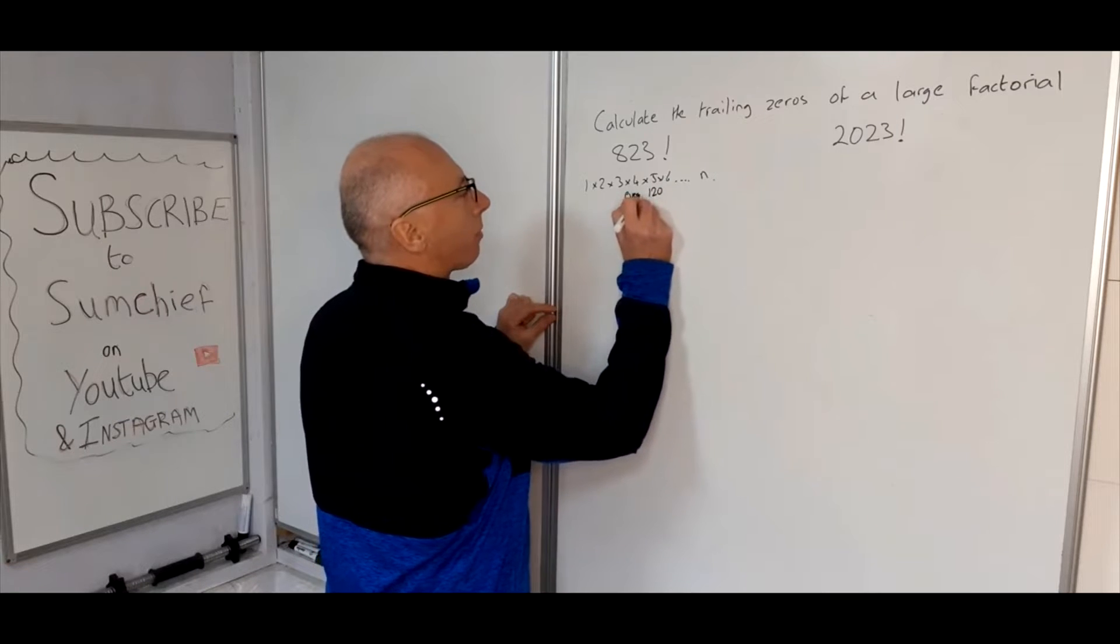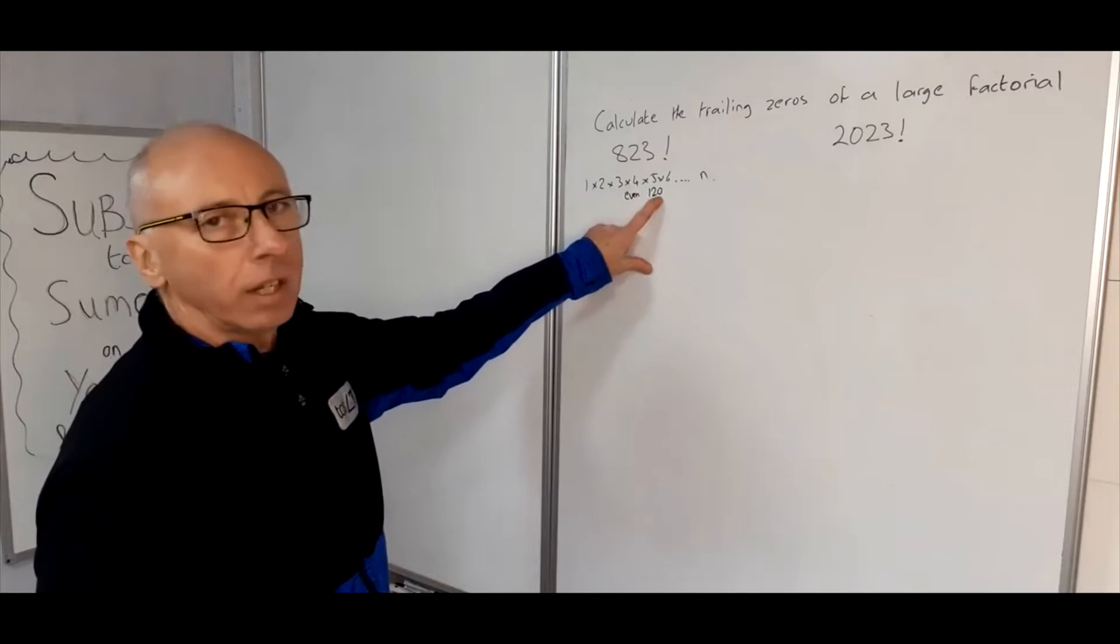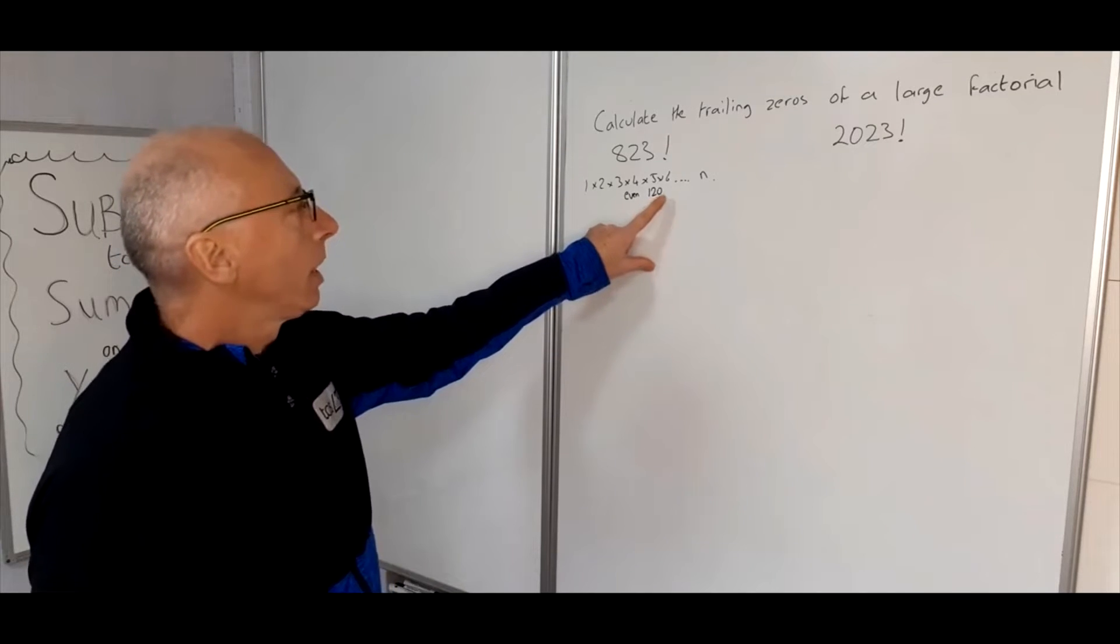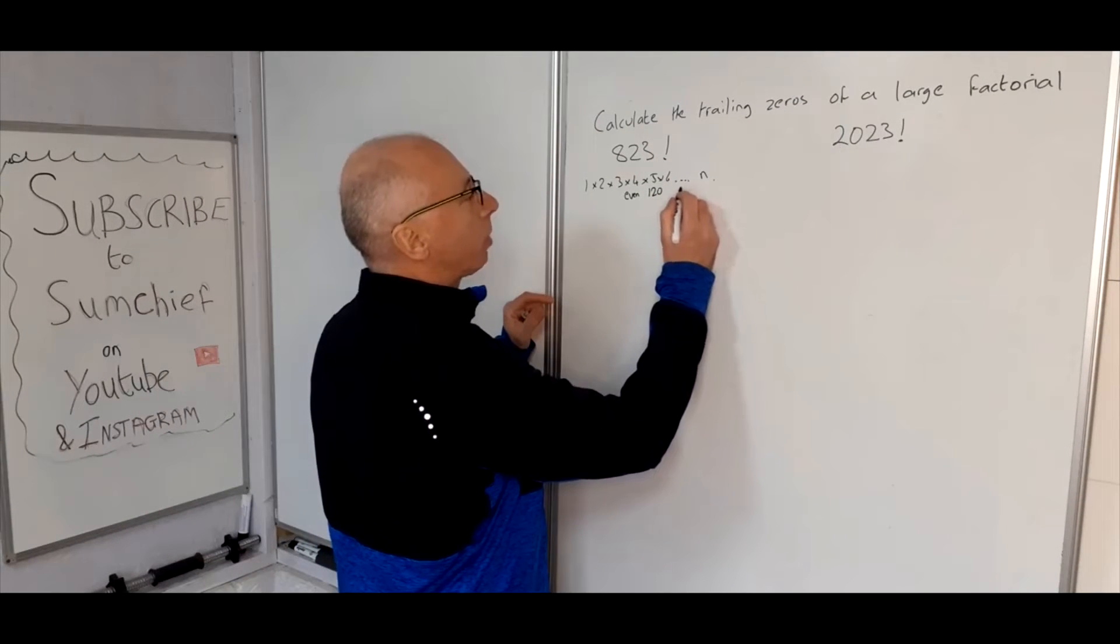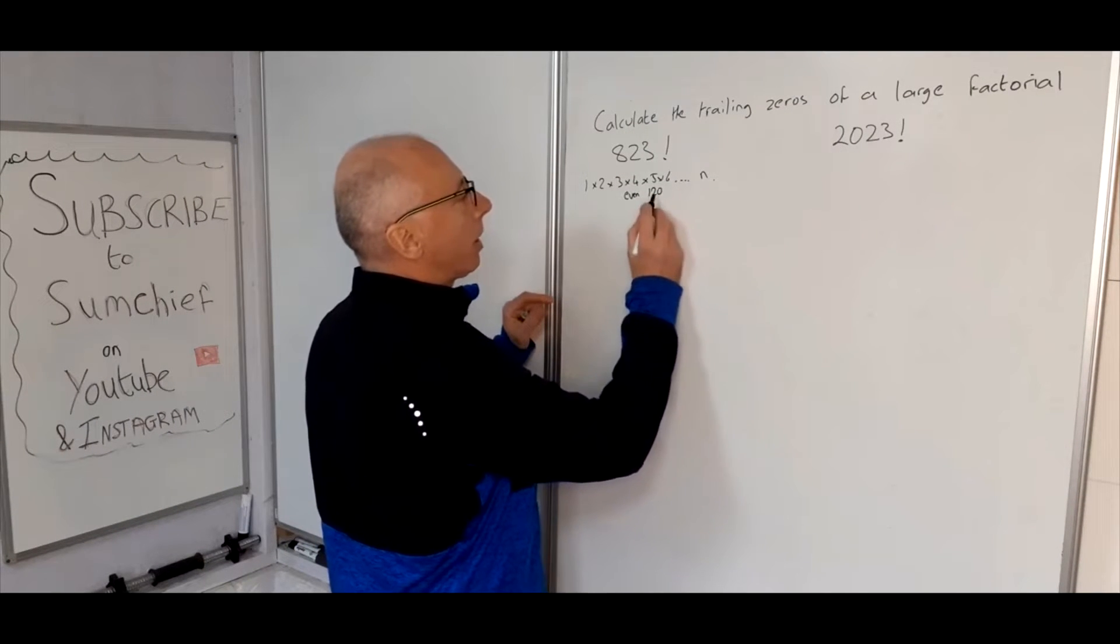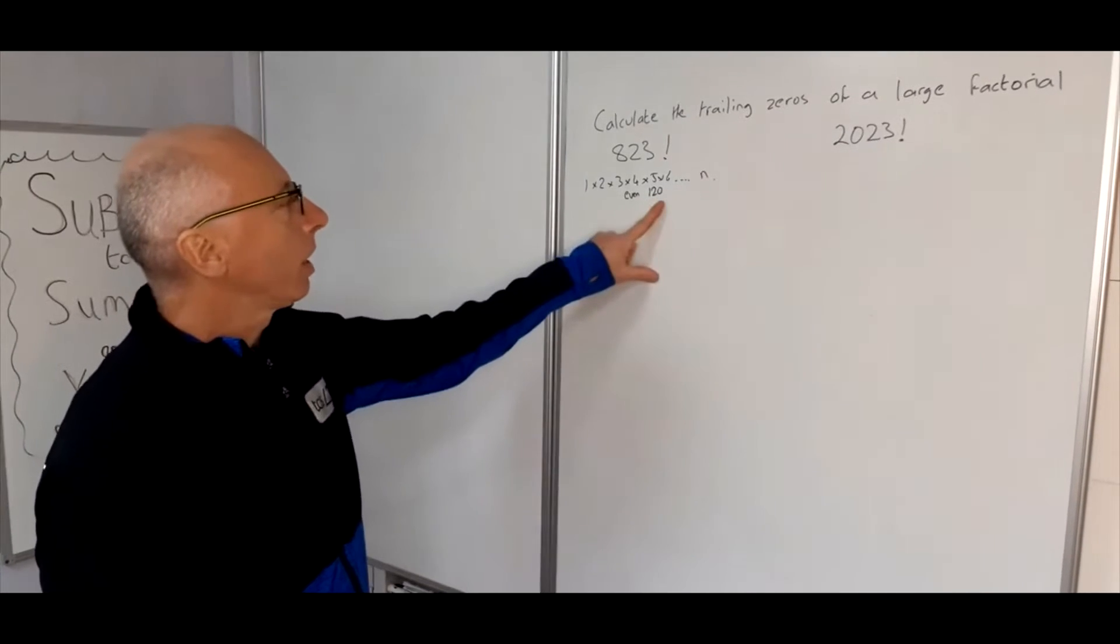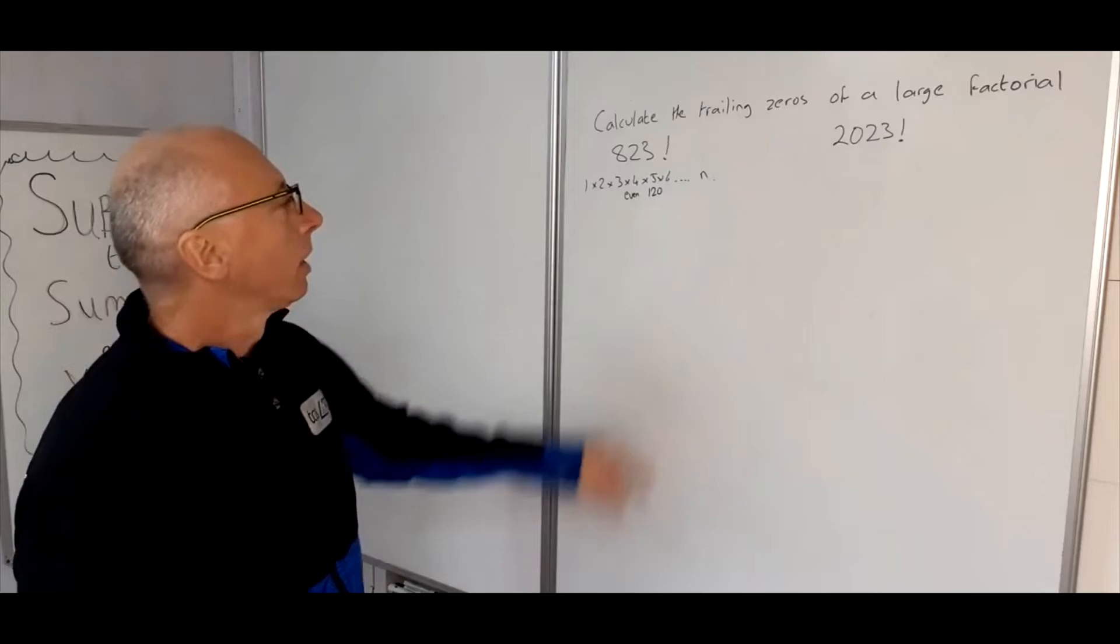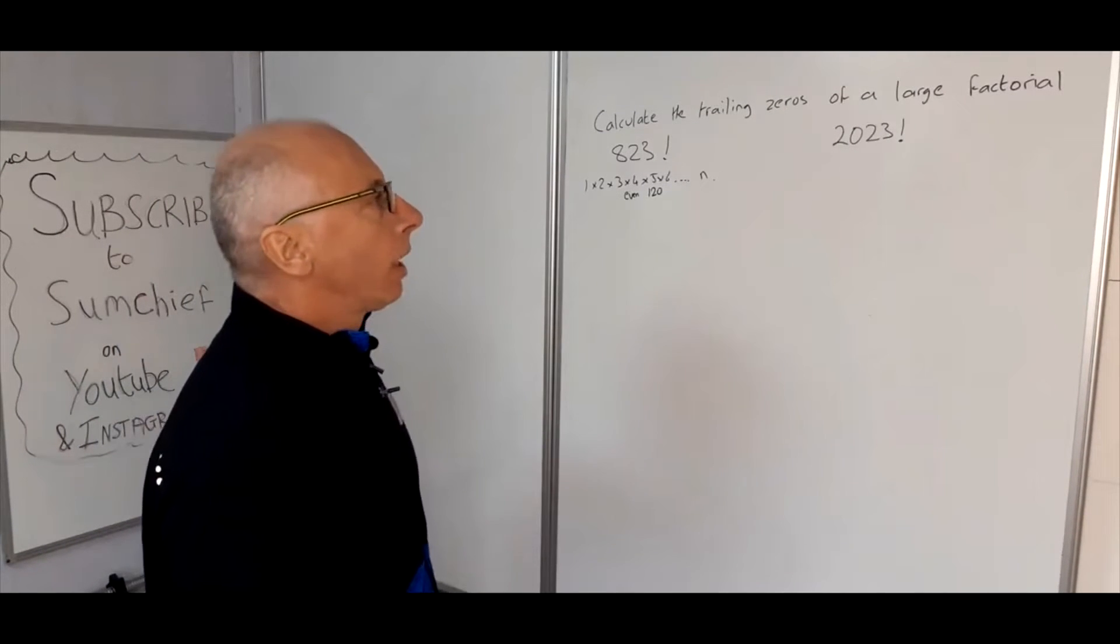And this one here is an even number, so that's going to yield us a trailing zero. Now if you move along down the line, multiply by 6, multiply by 7, multiply by 8, multiply by 9, that's not going to make any difference to those zeros. There's still only going to be one zero on the end. So what we can use is a formula.